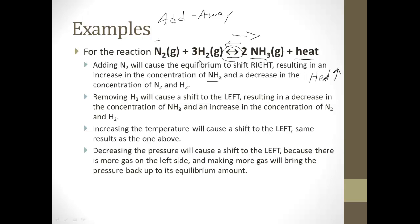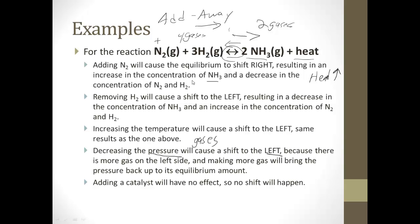Decreasing the pressure — with pressure, we have to think gases only. When we change the pressure, we count the gases on each side. On the left, three plus one equals four moles of gas. On the right, there are two moles of gas. When we increase the pressure — add, away — it'll go away from the side with the most gases, shifting to the right. A decrease in pressure causes a shift to the left. Adding a catalyst has no effect, so no shift will happen.